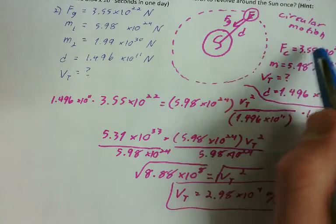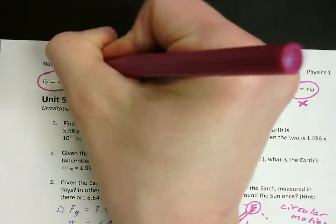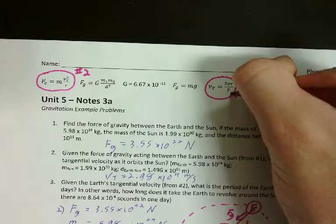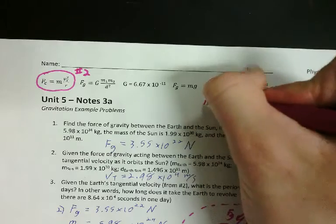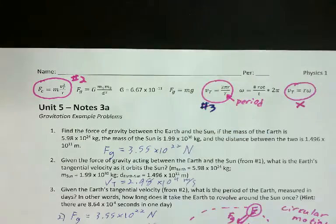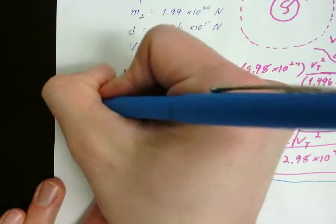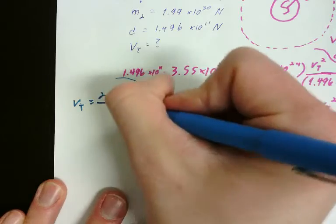So we know tangential velocity. We know all these other things, centripetal force, mass displacement, all that kind of stuff. So we use this equation for number 2. So we need to find period. Period is the time it takes to go around once. And that is this here. Capital T is period. It's the time it takes to go around once. So this is the equation we're going to use for number 3.